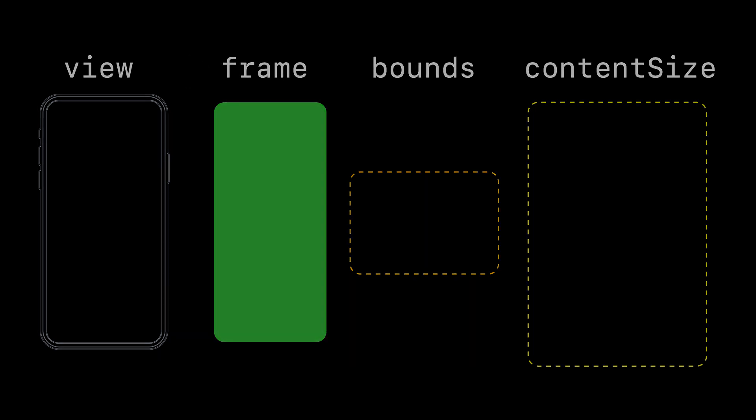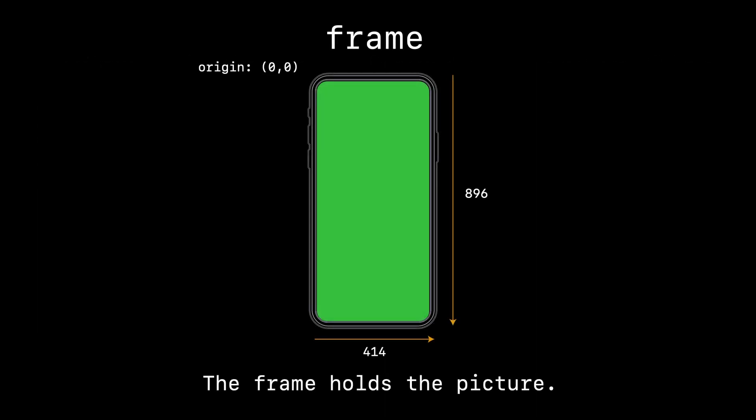Let's take a look first at the view's frame. When you create a view controller and present a view, there's this thing called the frame — it has an origin and a size. In this case for a full-size phone, think of the frame as really holding the picture for your view: this is what your view looks like, and this is its position and size.